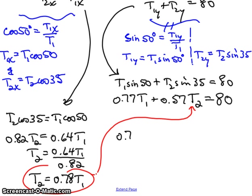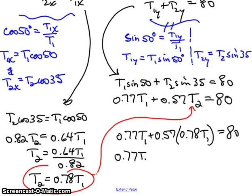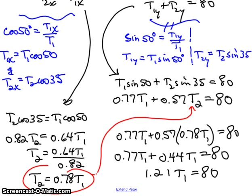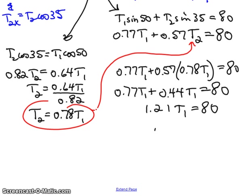Now I have a value for T2 that I can then substitute in here. In doing that, I get 0.77T1 plus 0.57 times 0.78T1 equals 80. Now it's just a matter of simple algebra, as long as you calculate it out properly. So 0.57 times 0.78 equals 0.44T1 equals 80. And I get 0.44 plus 0.77 gives me 1.21T1 equals 80.